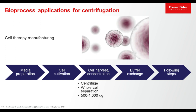For example, in cell therapy manufacturing, the centrifuge may play an important part to harvest and concentrate the cells. Usually it is whole-cell separation at low g-force. The whole cell is the product of interest, and no damage to the cell is key. The workflow is: media preparation, cell cultivation, cell harvest and concentration — in which the centrifuge may play an important part — then buffer exchange and following steps.